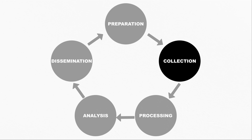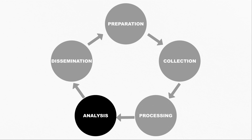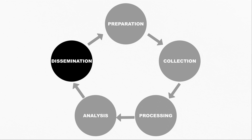Following this, we have the collection phase where you begin collecting your raw intelligence. You then move on to the processing phase, taking the data you collected and processing it in preparation for your analysis. The analysis phase is where you begin generating your intelligence from your collected and processed data. This is also commonly referred to as the analysis and production phase, as it's where you begin producing your intelligence product. Then you have the dissemination phase, where you'll send your findings to stakeholders as a completed intelligence product, such as a report.